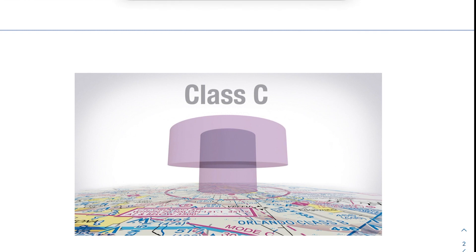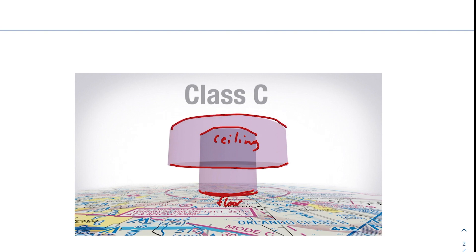It's that upside-down wedding cake concept where we have this inner ring — you can see it touches the surface of the ground. It goes up to some distance, which is our ceiling. And then here's our floor, and you can see the outer ring where the floor is here and the ceiling is up here. This is pretty typical of Class C airspaces, though some are slightly different due to geographic landmarks. In general, Class C airspaces look like this upside-down wedding cake. Right now we're only focused on this top tier.